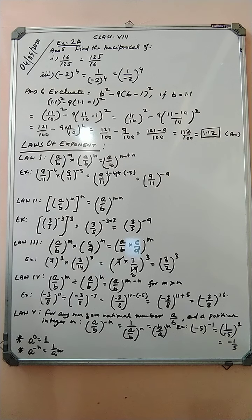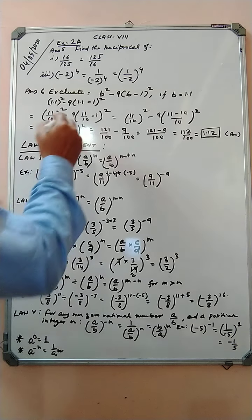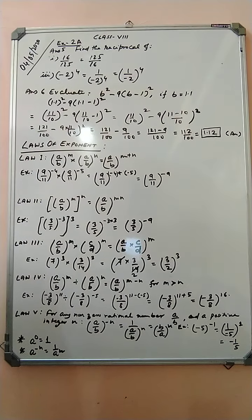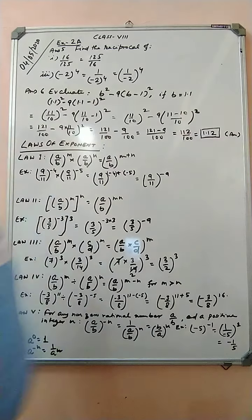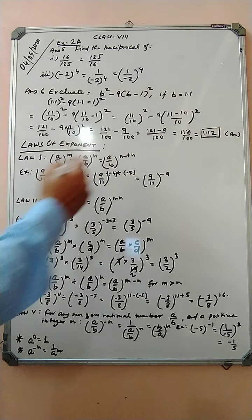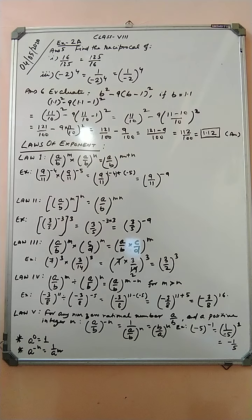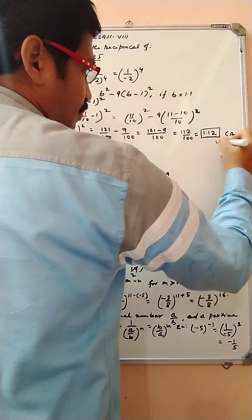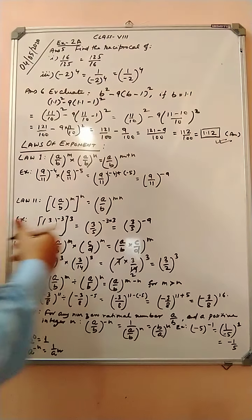So 121 by 100 minus 9 into (1 squared is 1, 10 squared is 100) = minus 9 by 100. Now the LCM is 100, so 121 minus 9 equals 112 by 100, which equals 1.12.